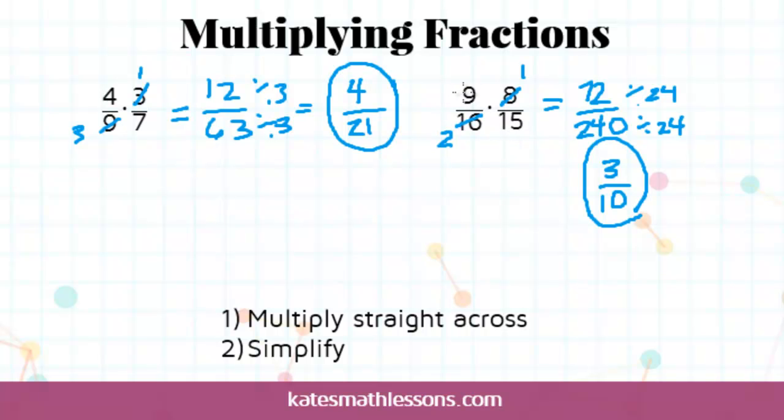So I can divide these both by 3. 9 divided by 3 is 3. 15 divided by 3 is 5. And now when I multiply across, I get 3 times 1, that's this 3 here. And 2 times 5 is 10. So I tend to do the simplifying first. I think that's usually easier because you're dealing with smaller numbers when you multiply. But you can do it either way. Just make sure that your final answer is simplified.